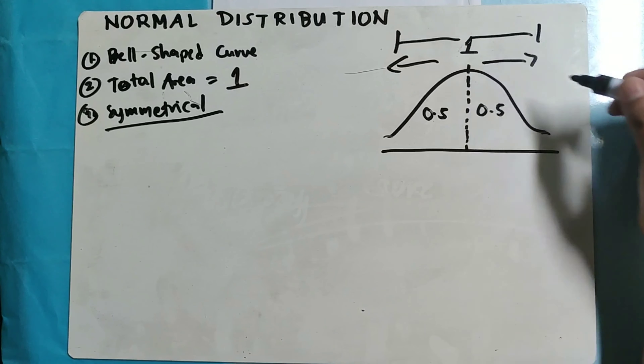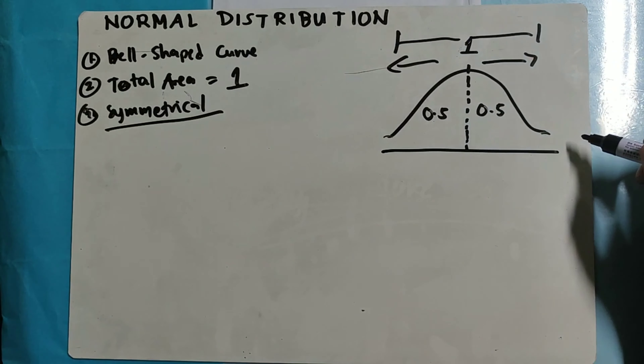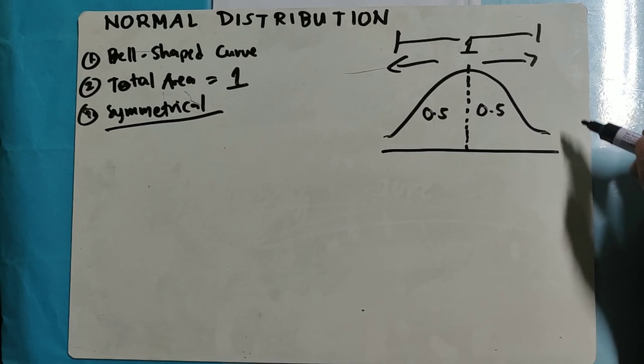And the third, we have symmetrical. When we say symmetrical, it talks about balance or proportion. So when we divide the bell-shaped curve in the middle, since it is symmetrical and the total area under the normal curve is 1, in the right tail we have 0.5, and in the left tail we have 0.5. The total area under the normal curve is 1.